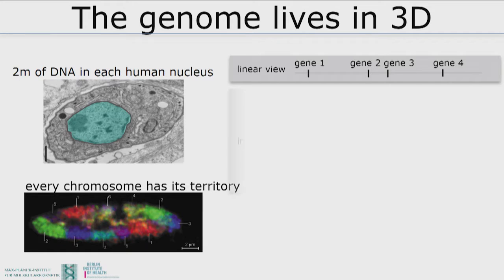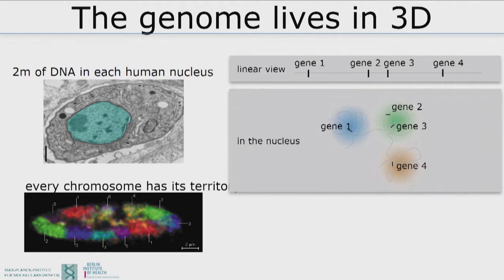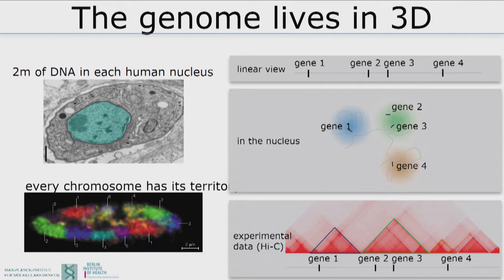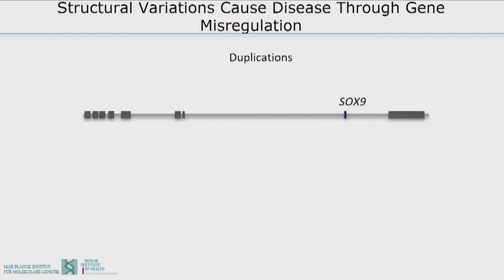Whereas in the nucleus, it's more and more clear that each gene has its own little environment where one or more genes are all together with enhancers and regulatory elements that regulate this. And in data, they look like this — identified in the last five to ten years or so. These are called TADs. And we study rare diseases and look at patients that carry structural variations such as duplications.